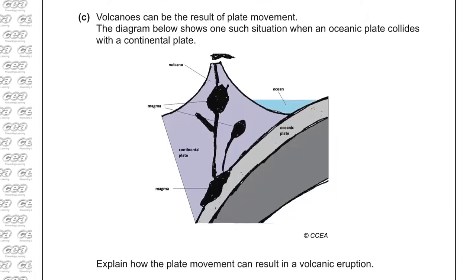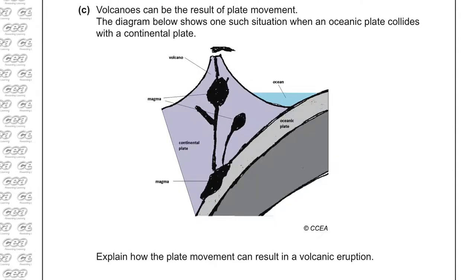Part C then. Volcanoes can be the result of plate movement. And the diagram below shows one such situation where an oceanic plate collides with a continental plate. So, this is a subduction here. And during subductions we get the creation of volcanoes.